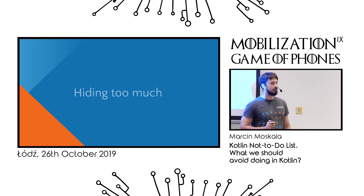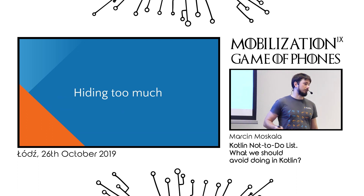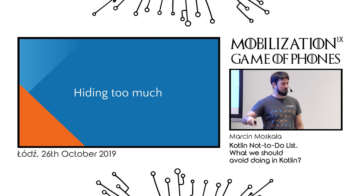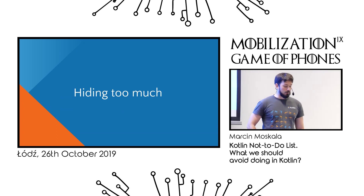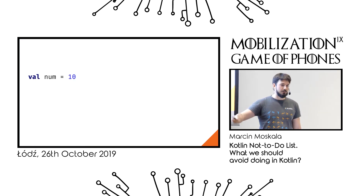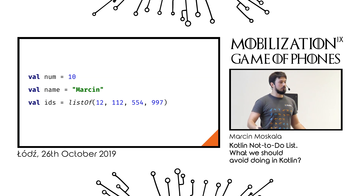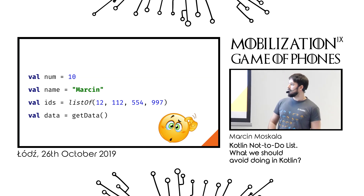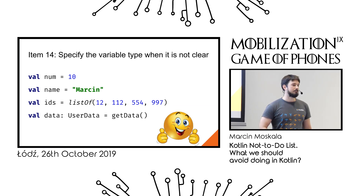The first big sin is hiding too much. Hiding what is important is not good. When it's clear something is an integer or a string, it's great you don't need to say it explicitly. But what if the type is not clear at all? In such cases, the type might be really important information, and it's better to provide it.